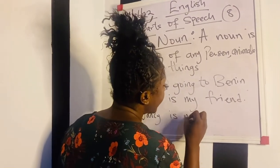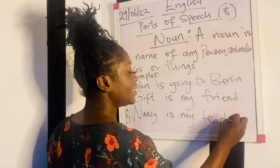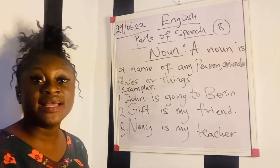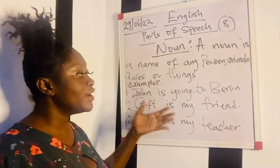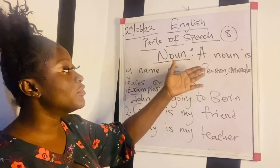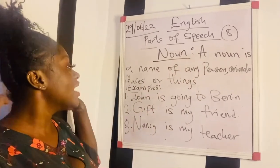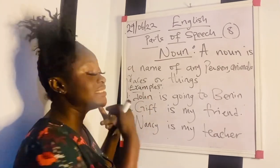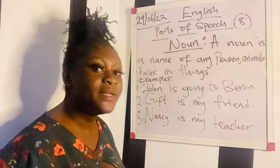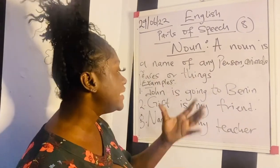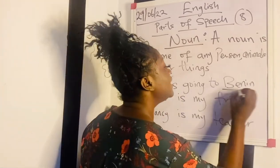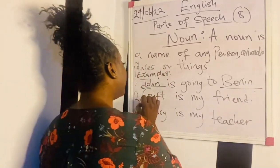I brought out three sentences on the board for us to underline the nouns. A noun is the name of any person, so John is a noun. Benin is the name of a place, so Benin is a noun. Gift is a noun and Nancy is a noun — we underline those nouns in the sentences.